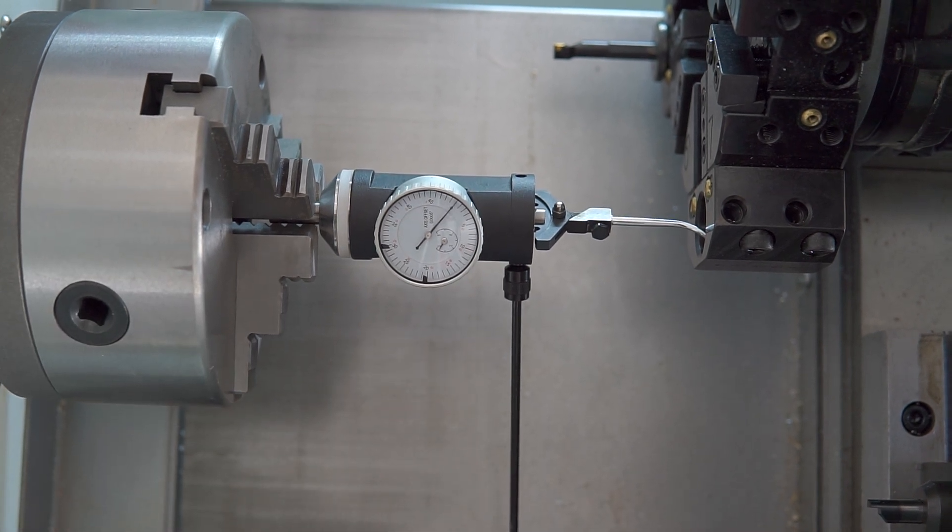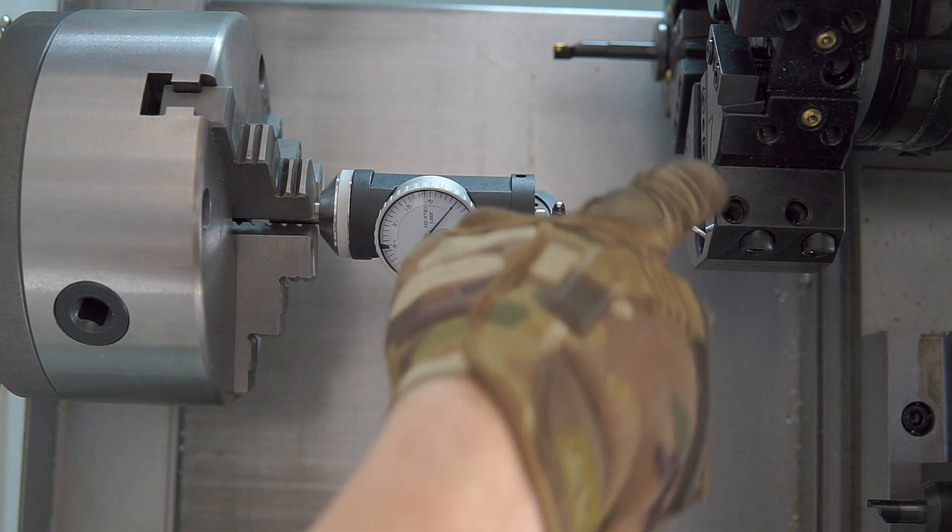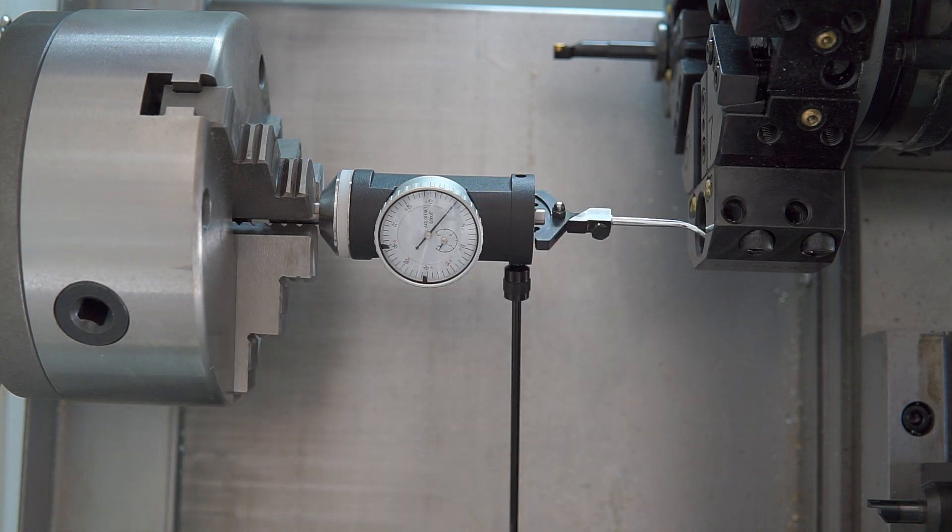This is helpful when indicating things like a pocket, twist drills, or anything round that you're going to be driving into the center of the spindle.